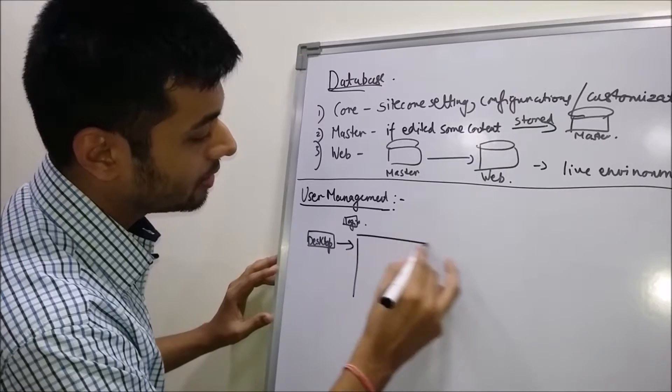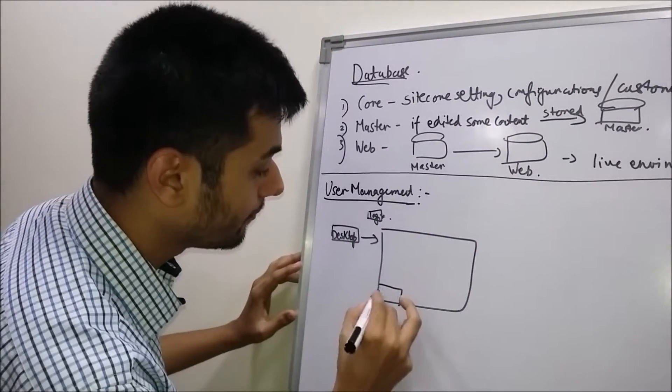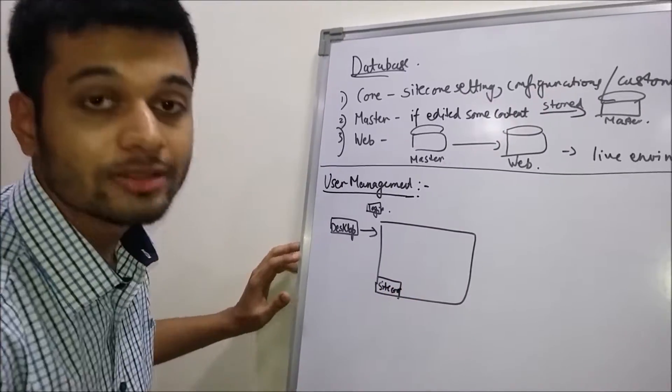Then a page opens up. At the bottom of the page, there's a label called Sitecore. You have to click on that.